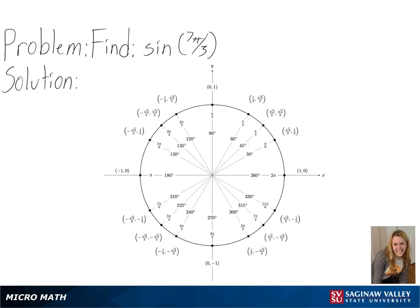We can see here that our value is larger than 2 pi, so we will start out by separating our 7 pi over 3 by pi over 3 plus 6 pi over 3, or pi over 3 plus 2 pi.